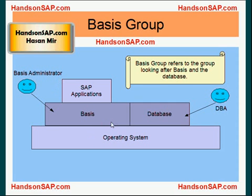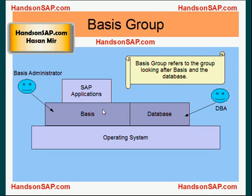The basis administrator looks after any functional and technical problems related to the basis software. The DBA, also known as the database administrator, looks after the health of the database. So basis administrator looks after the health of the middleware, while the DBA looks after the health of the database.